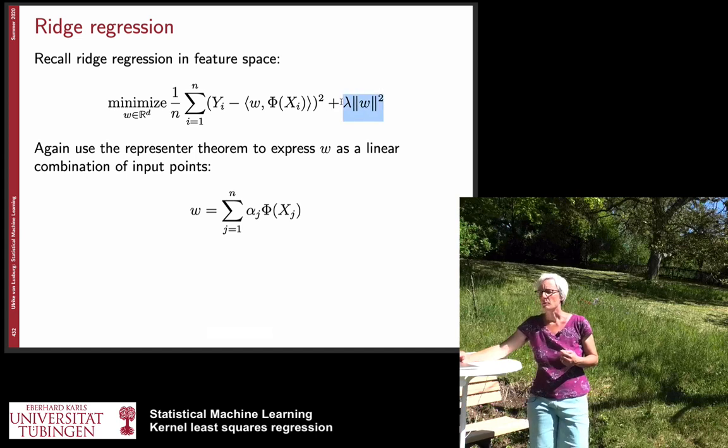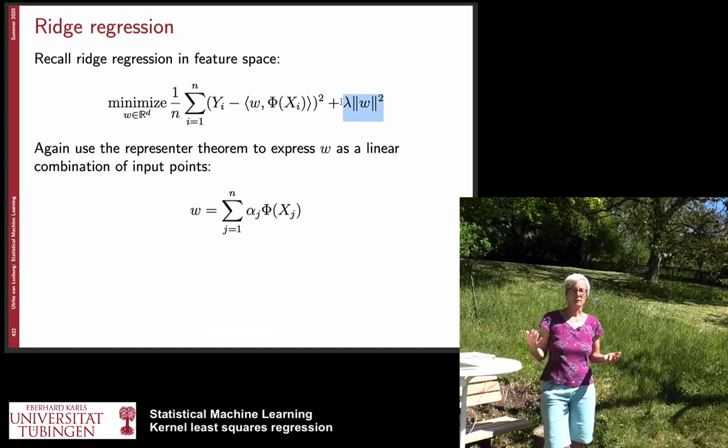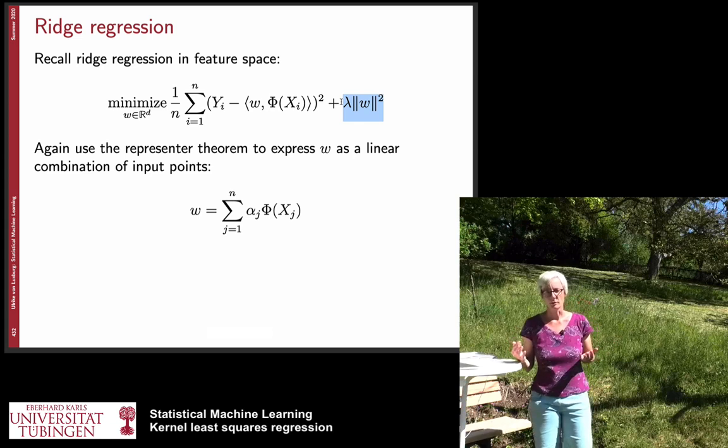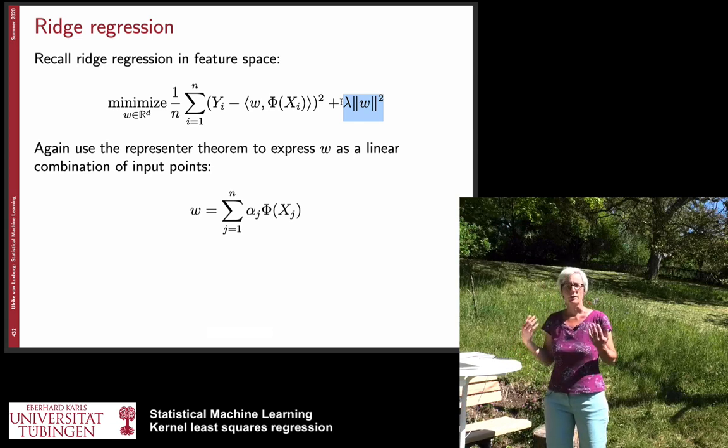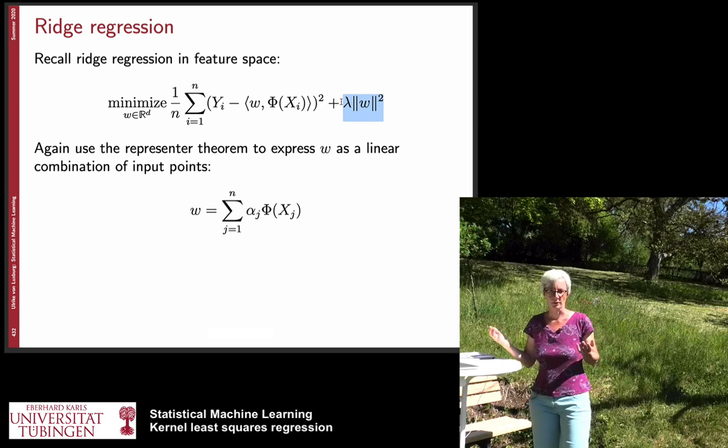Remember it's like the least squares problem we had before but we have this additional regularization term which was lambda times norm of w where this norm was in the space where we are and if you are in a feature space it's the norm in the feature space.